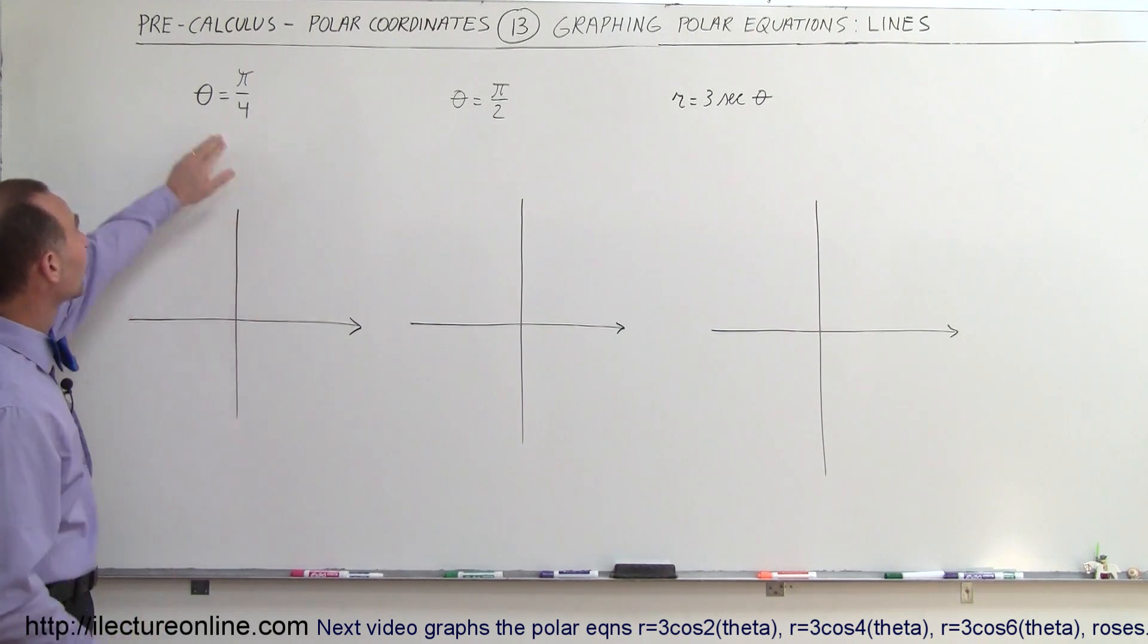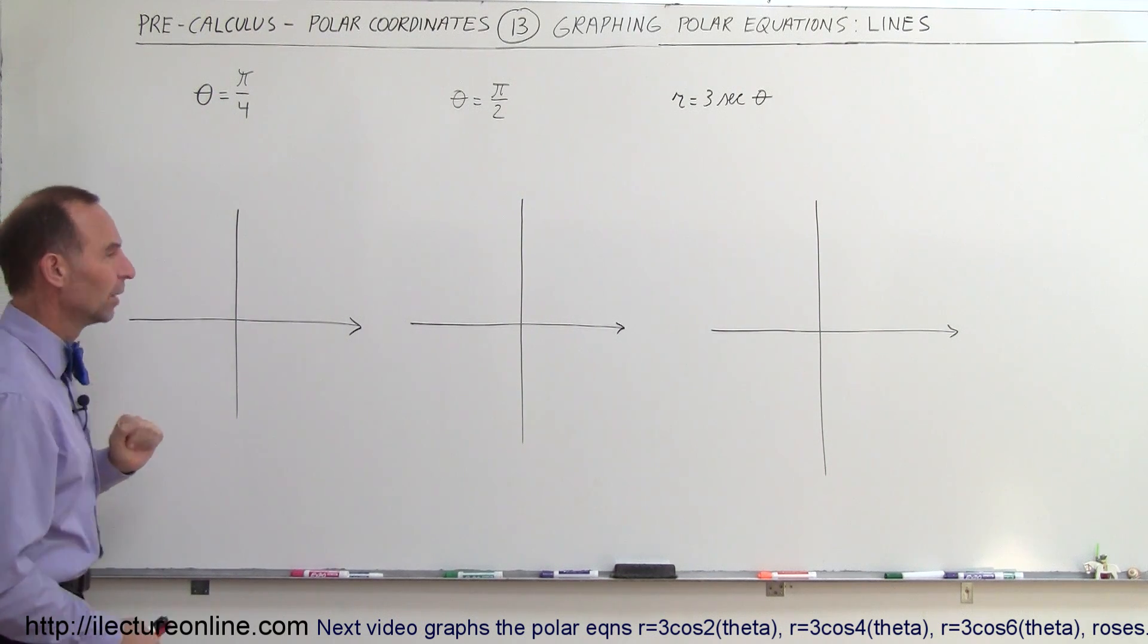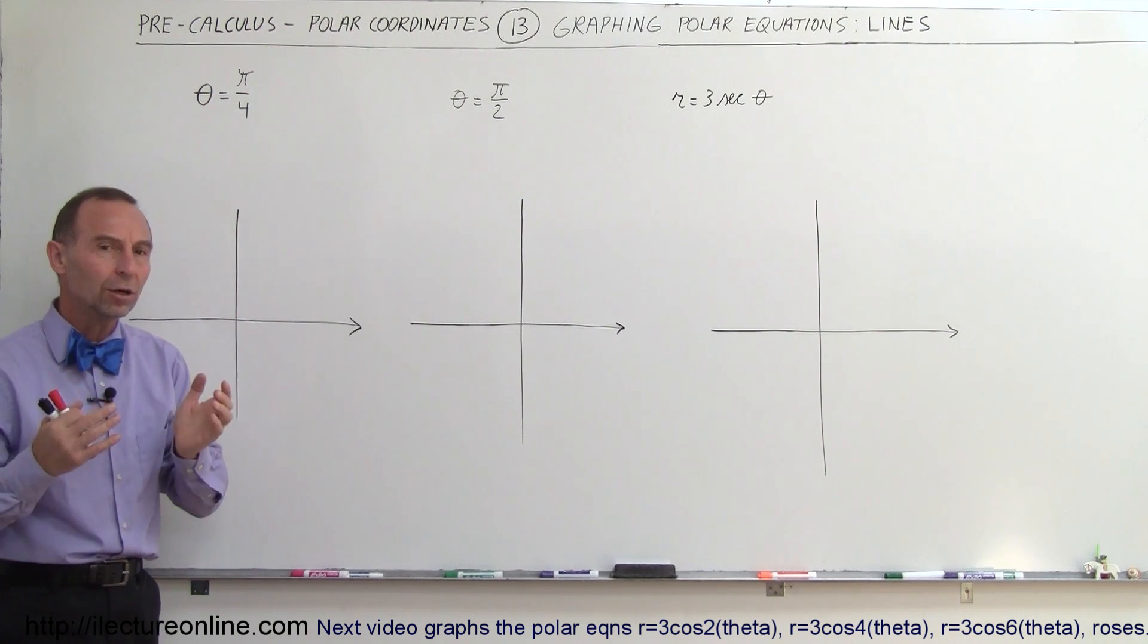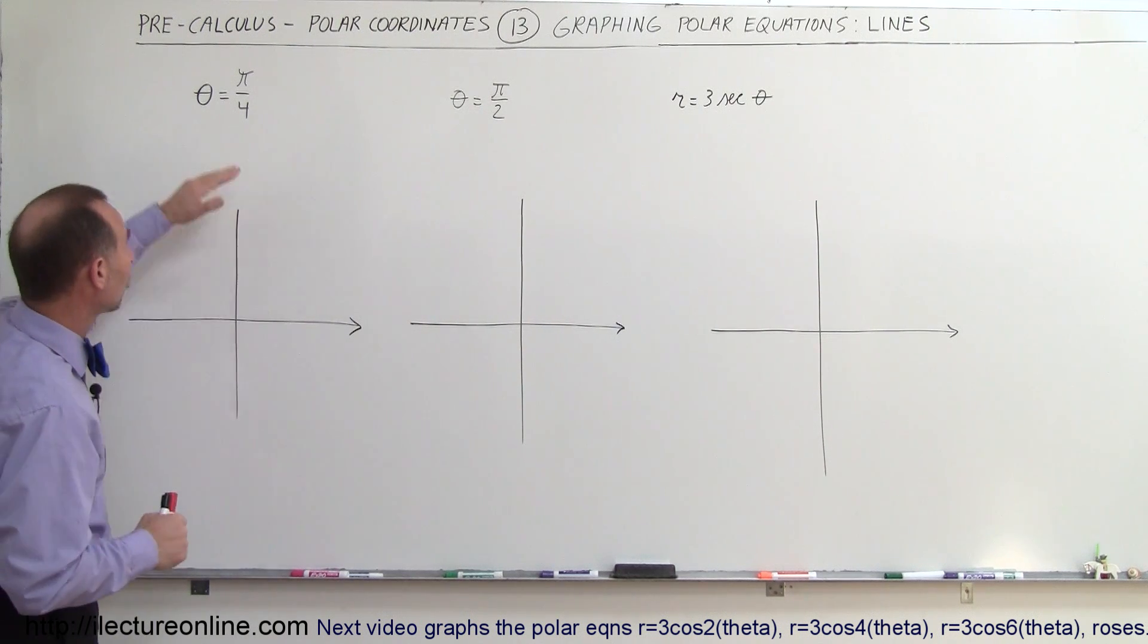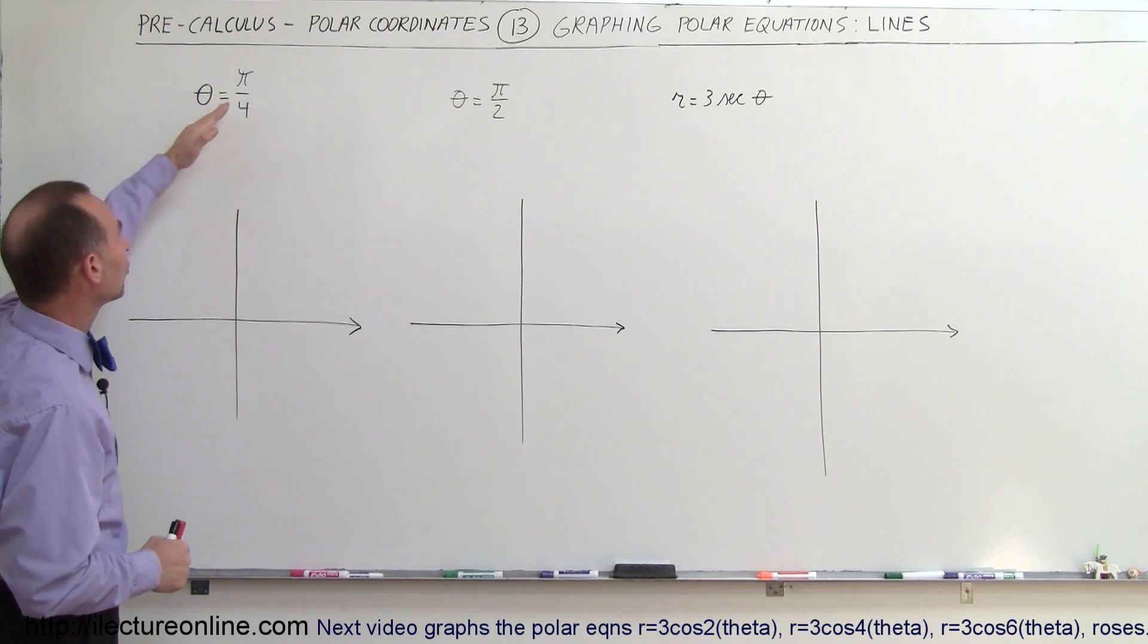So the first one here is theta equals pi over 4. We don't see the value for r, which means r has no restrictions. r can be any value. We're just restricted by the angle theta, which is pi over 4, which is a 45 degree angle.